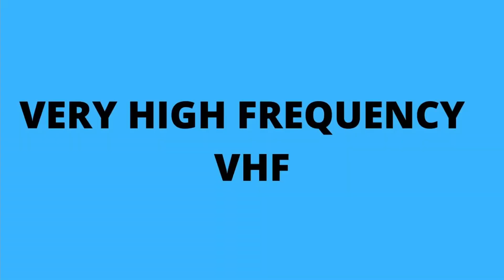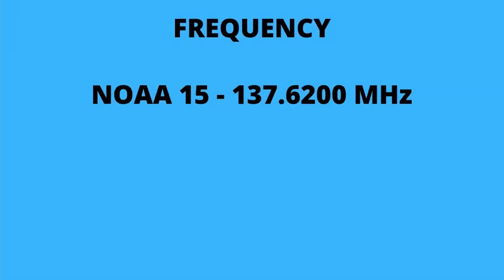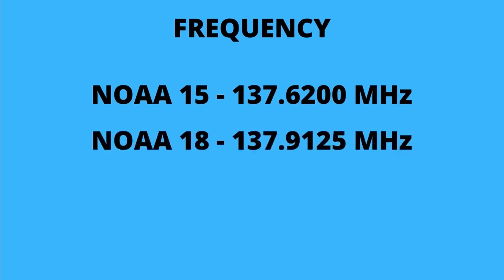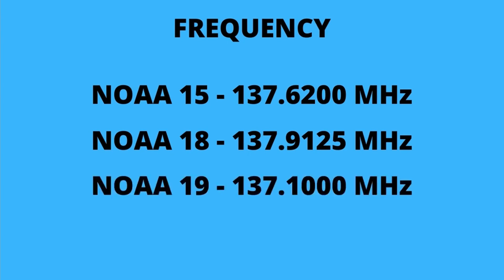The frequency of these satellites is in VHF, that is Very High Frequency. NOAA 15 frequency is 137.6200 MHz, NOAA 18 frequency is 137.9125 MHz, and NOAA 19 frequency is 137.100 MHz.